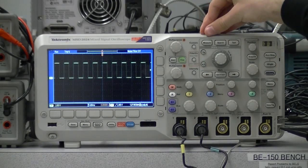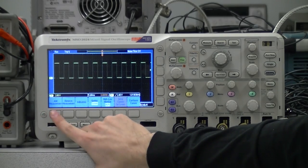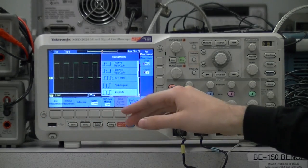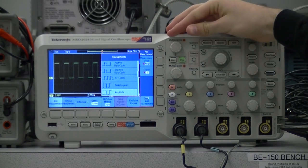To add measurements besides the default ones at the bottom, we can press the measure button here. This brings up another menu. We can press the first button here to add a new measurement.